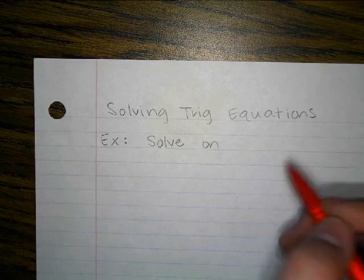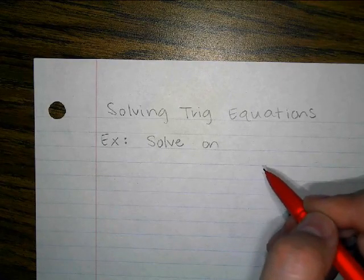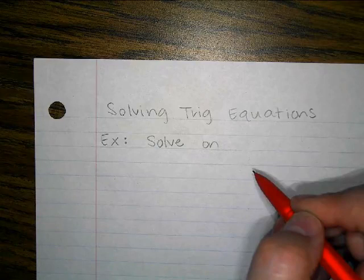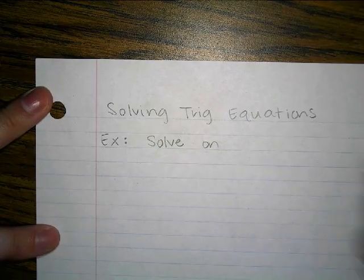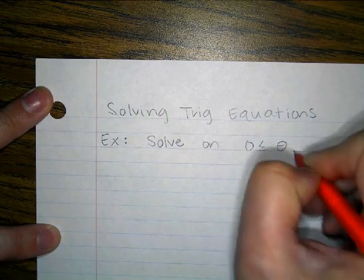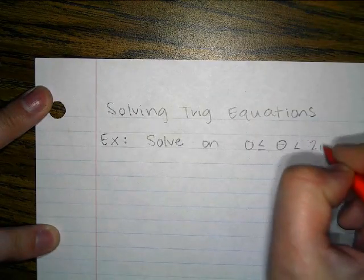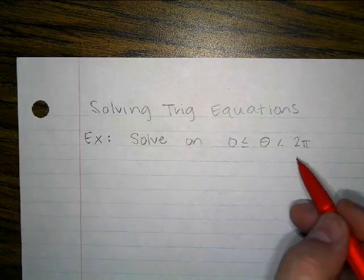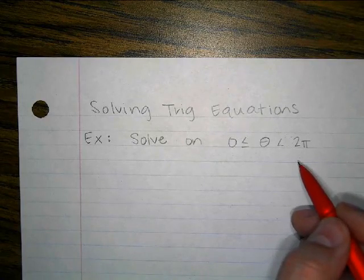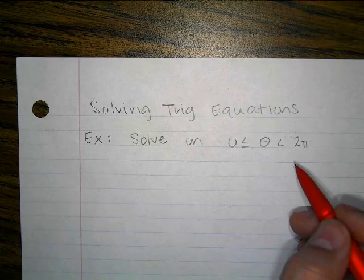Whenever you solve trig equations, they're always going to tell you if they want you to find all solutions, or if they want you to find the answers that are on the unit circle, or if they want you to find answers from negative 2π to 2π or something like that. They're always going to tell you an interval to look at. We're going to use the interval from 0 to 2π. When it says solve on 0 to 2π, that means just find the answers that are on the unit circle — don't look for coterminal angles or any repetitions of answers.